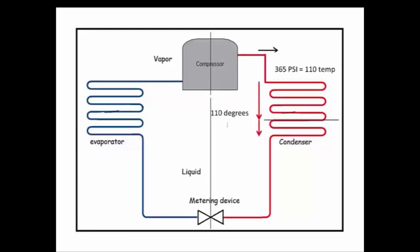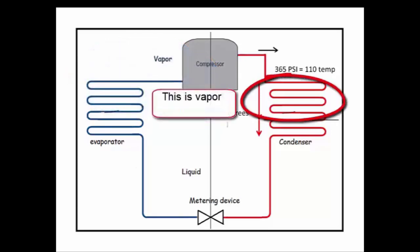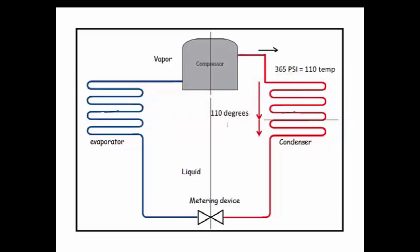So going back to our system here, if things are working perfectly, the temperature of the refrigerant entering the condenser is 110 degrees, which means it's at 365 psi. And as it travels down through the condenser to the black line, it remains 110 degrees. But it's dissipating heat, which is condensing the refrigerant, and it's giving off that heat to the air passing through the condenser.